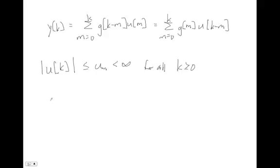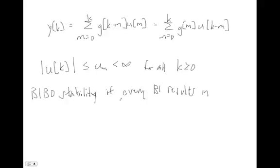Bounded input bounded output stability is also literally the exact same definition, because it's an intuitive concept definition: a system is bounded input bounded output stable if every bounded input results in a bounded output. That means every bounded input — if even a single bounded input results in an unbounded output, then the system is not BIBO stable. Just like with continuous time systems, this is very difficult to prove experimentally because you can't test every possible bounded input. So we look at underlying properties of our system's impulse response to determine BIBO stability.